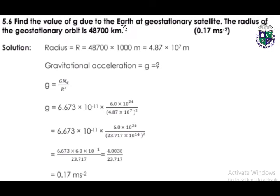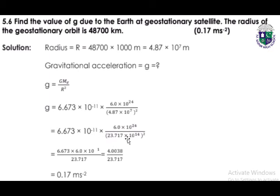Question 5.6: find the value of g due to the earth at a geostationary satellite. The radius of the geostationary orbit is 42,700 kilometers. We have to find the gravitational acceleration using the same formula g = G·Me / R². By putting the values of G, Me, and R and calculating, we get the answer: 0.17 m/s².